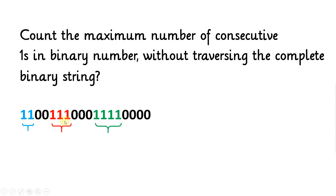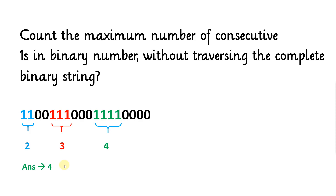So this is the given binary string and we have different sequences of 1. The first sequence has number of 1s equals to 2, the second sequence has number of 1s equals to 3, and the third sequence has number of 1s equals to 4. Among all these, the answer is 4 because we need to return the maximum number of consecutive ones. This is the problem.